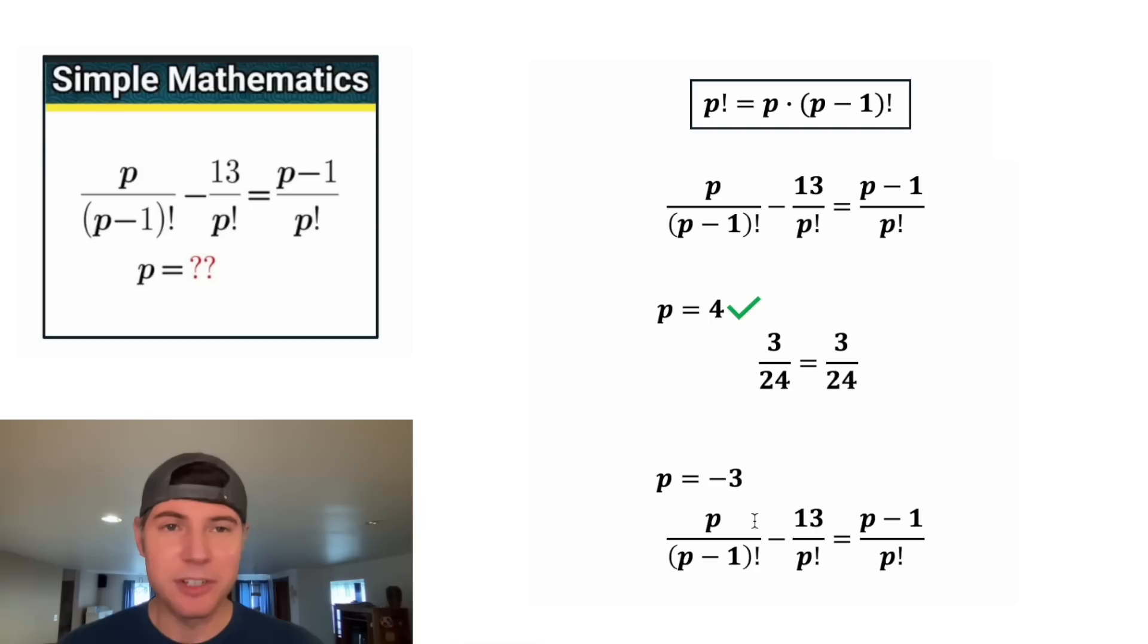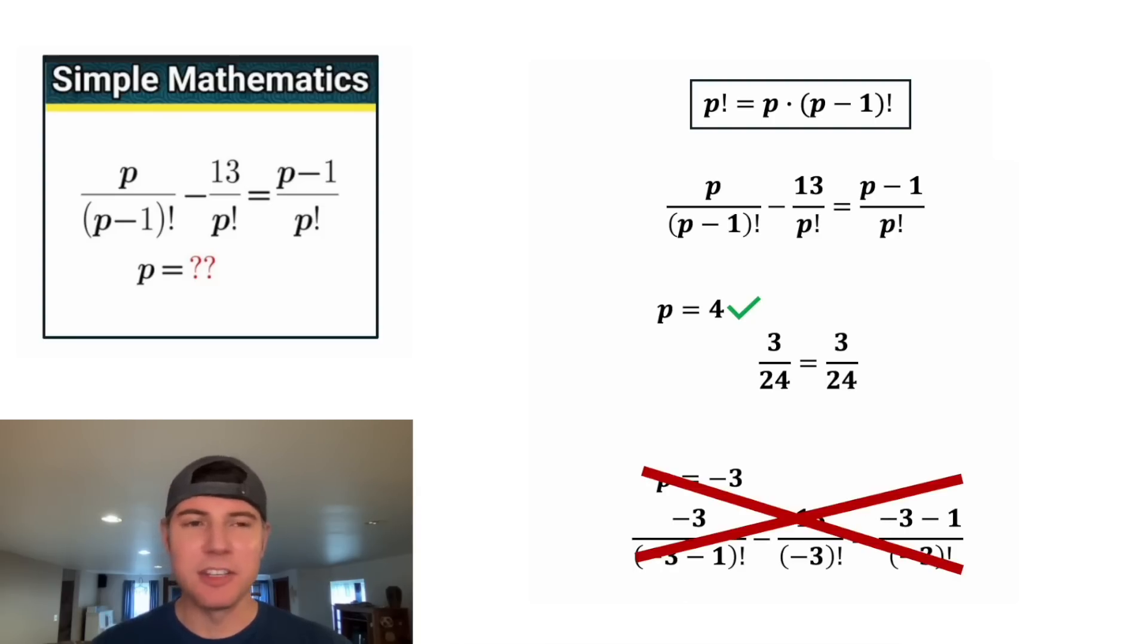Now we can look at this p is equal to negative 3. In the place of all the p's, let's plug in negative 3. And right away I'm noticing we have negative 3 factorial. A factorial is not defined for negative numbers, so we can disregard this solution. There may be some interesting stuff if we look at negative factorials, but I'm pretty sure for this problem it's meant to be undefined. If you want me to make a video about negative factorials, let me know in the comments. And if you know anything about negative factorials, let me know in the comments.